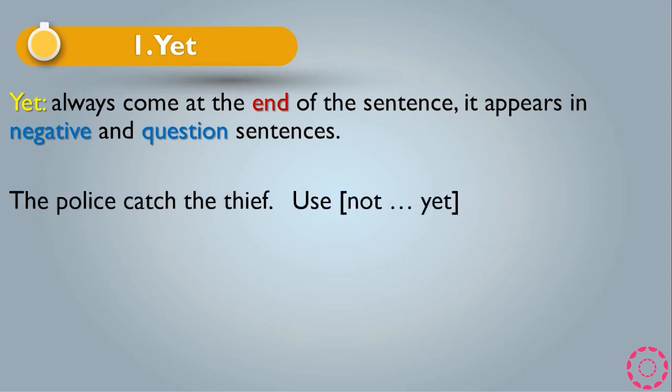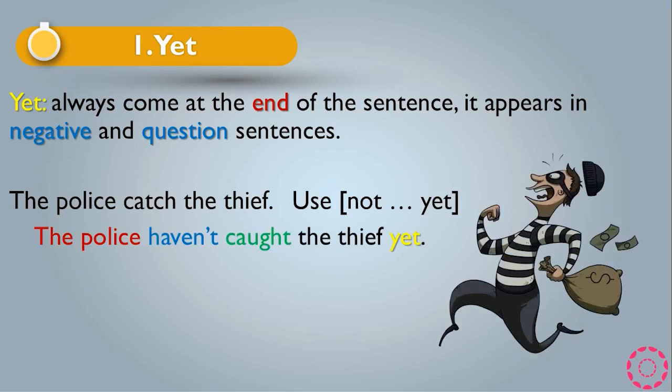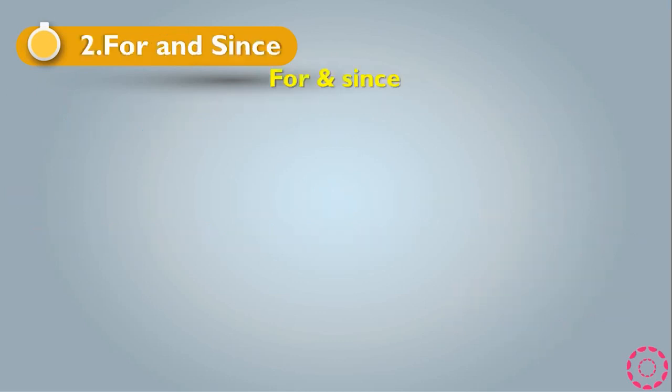Another example: 'The police catch the thief' — use not yet. It becomes 'The police haven't caught the thief yet.' The police is the subject so we use have. We use yet with the negative, and catch became caught because the past participle of catch is caught.